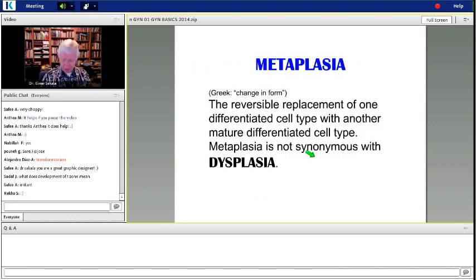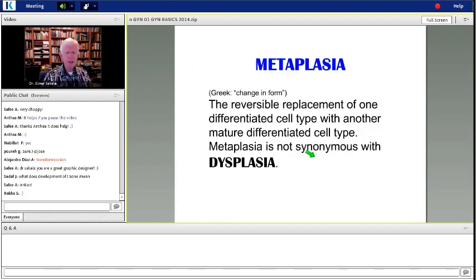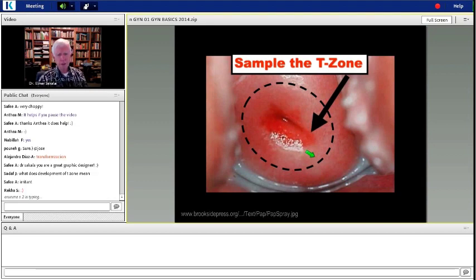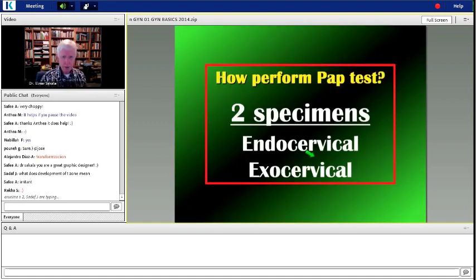Metaplasia is a reversible replacement of one differentiated cell type with another mature differentiated cell type. It is not dysplasia. It is metaplasia. This is another image, and you can see here on the black arrow is a squamous columnar junction. The dotted dashed area is probably where the junction was, and the area between is known as the T-zone.